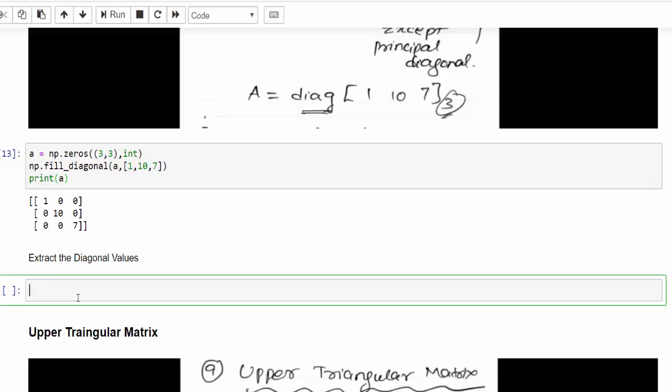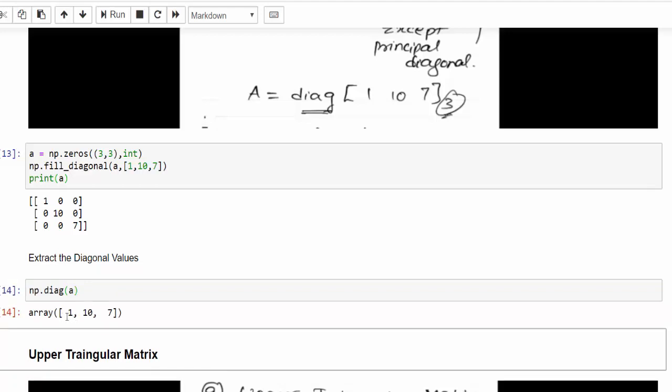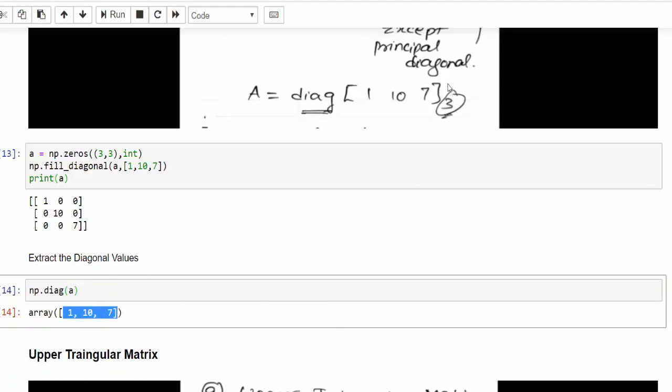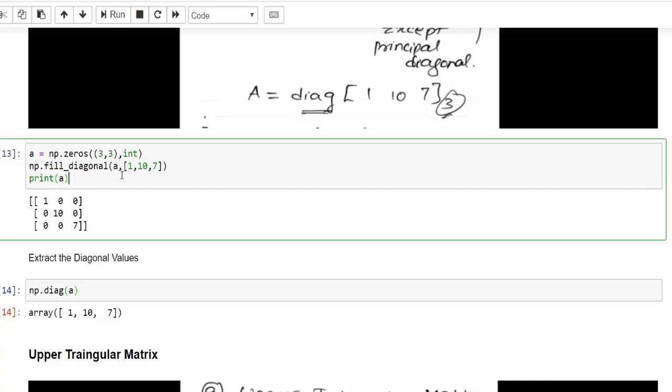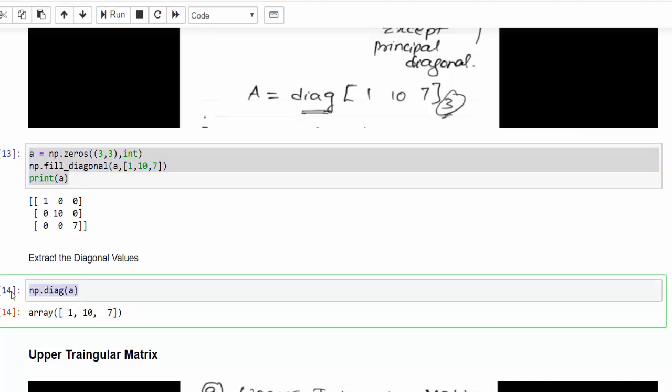Let us put it in a reverse condition. We have a matrix. In that matrix, I want to extract the diagonal values. How to do that? Very simple, np.diag, pass that matrix, run it, it is 1, 10, 7. So to create, we have to do it like this. If you want to retrieve the value, you can follow this.